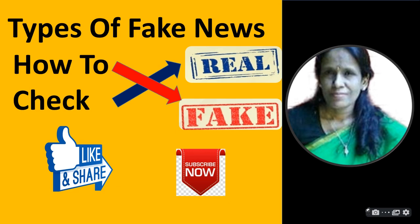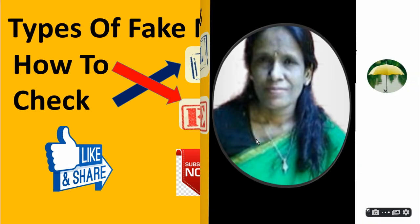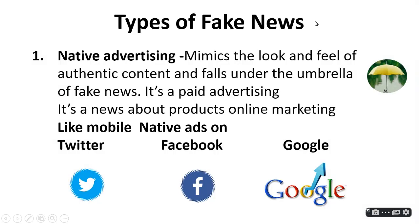In this video we'll look at types of fake news and how to check if something is real or fake. The first type is native advertising, which mimics the looks and feel of authentic content and falls under the umbrella of fake news — it's essentially fake advertising.